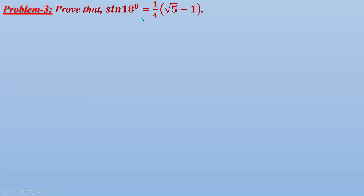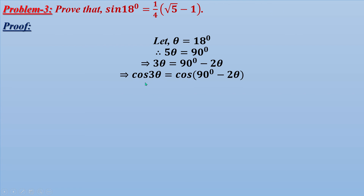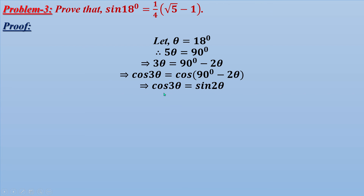Problem 3: Prove that sin18° = (1/4)(√5 - 1). Proof: Let θ = 18°. Multiplying both sides by 5 gives 5θ = 90°. We write 5θ = 3θ + 2θ, so 3θ = 90° - 2θ. Taking cos on both sides: cos3θ = cos(90° - 2θ) = sin2θ. Using cos3θ = 4cos³θ - 3cosθ and sin2θ = 2sinθ cosθ.